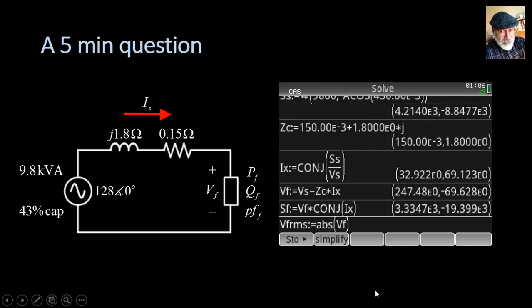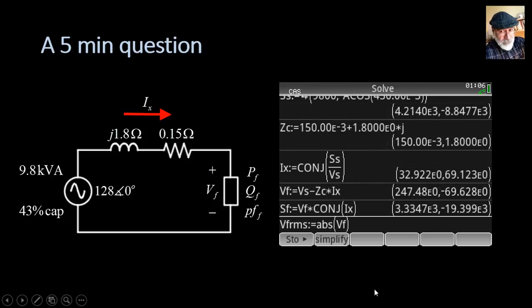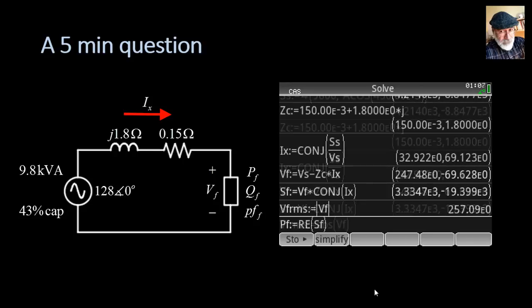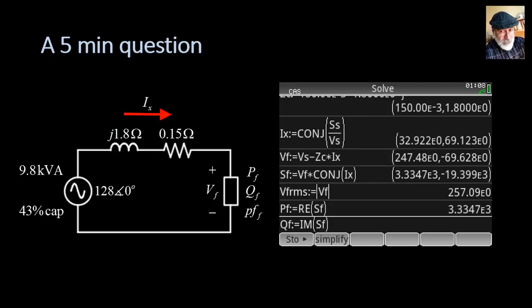What is the RMS value of the voltage at the load? Absolute value Vf: 257 volts. What is the active power at the load? Real part of Sf: 3.3 kilowatts.